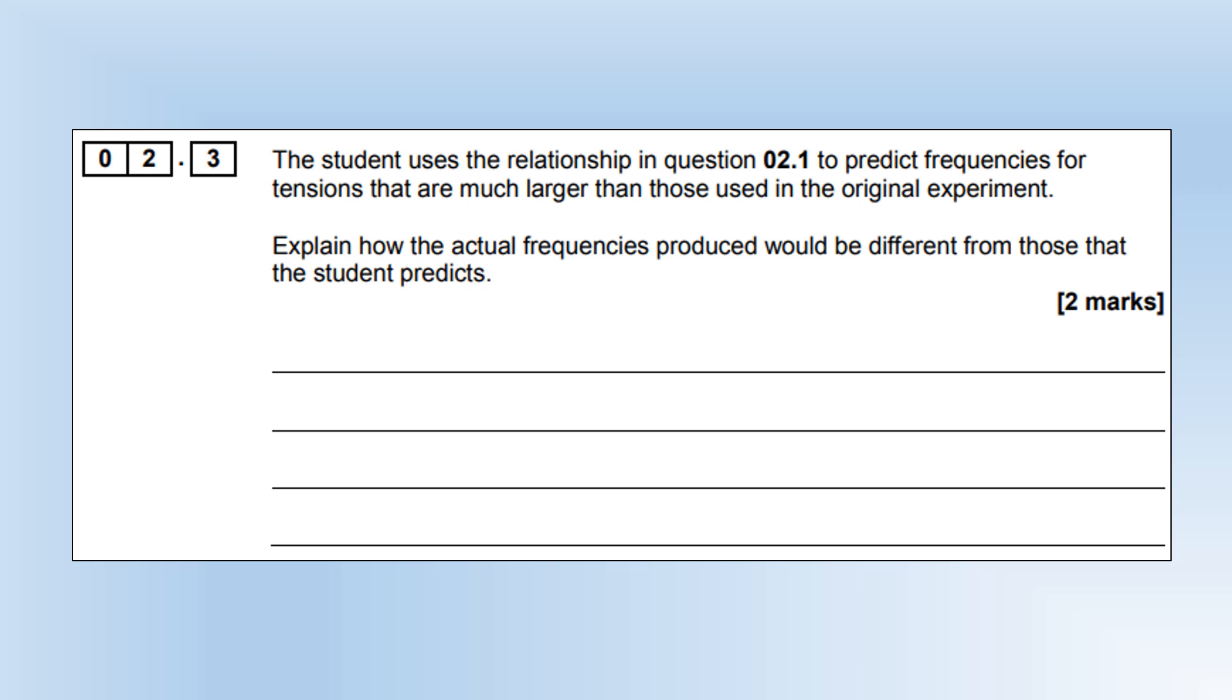The student uses the relationship in question 2.1 to predict frequencies for tensions that are much larger than those used in the original experiment. Explain how the actual frequencies produced would be different from those that the student predicts. At large tensions, the string is going to start to stretch and its diameter is going to start to decrease, so that's going to make the mass per unit length smaller, causing the frequency to get larger.